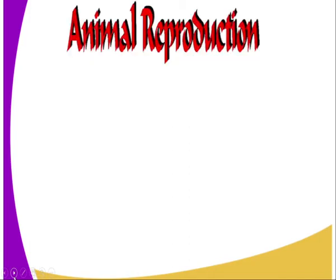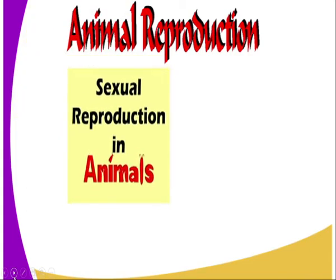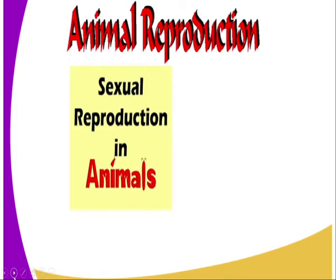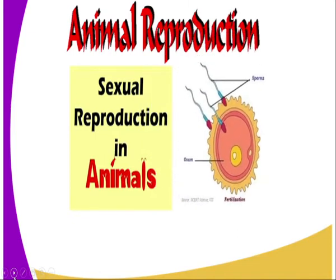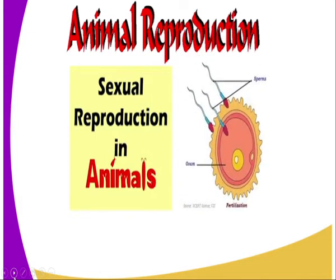Then we have types of reproduction. We have animal reproduction, and in this case we are dealing with animal reproduction. There are two types of reproduction as far as animal reproduction is concerned. We have sexual reproduction, and also we have asexual reproduction. In sexual reproduction, it deals with the fusion of the male and the female gametes, that is the sperm and the ovum.